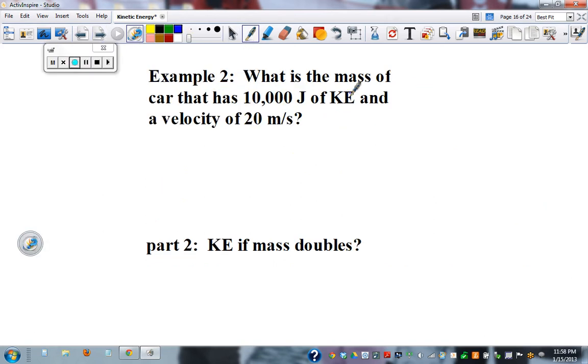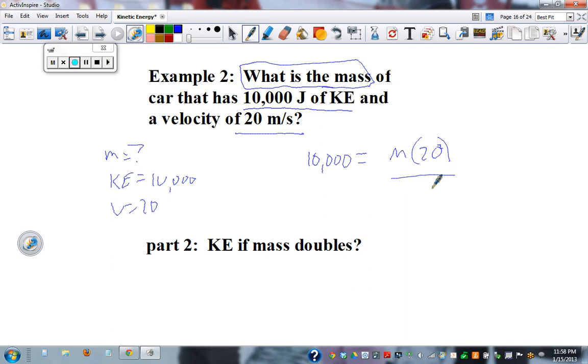Example number 2. What is the mass? So now we're finding mass. Of a cart that has 10,000 joules of kinetic energy and a velocity of 20. Mass, we don't know. So kinetic energy equals 10,000 and velocity equals 20. So 10,000 equals mass times 20 squared over 2.